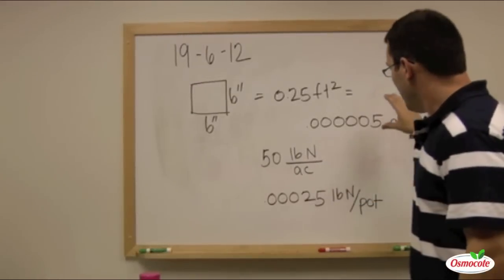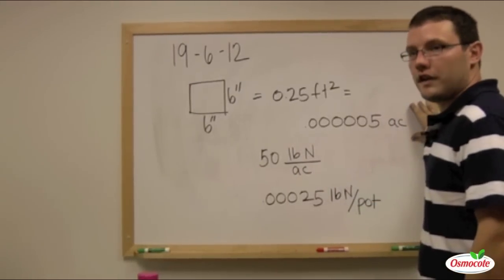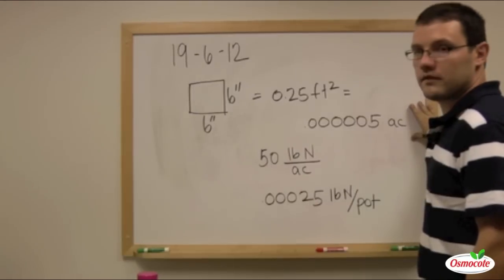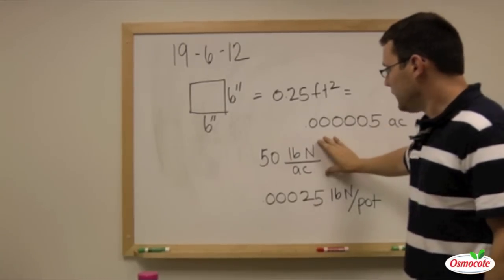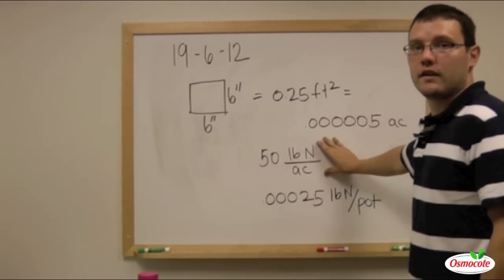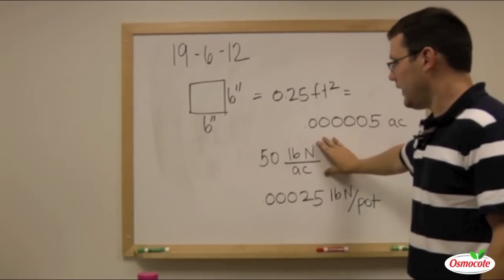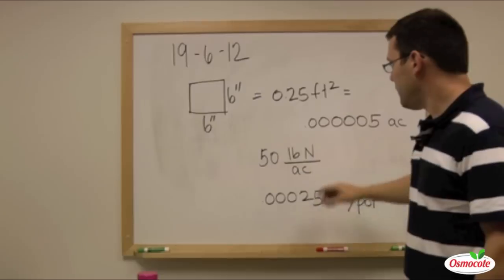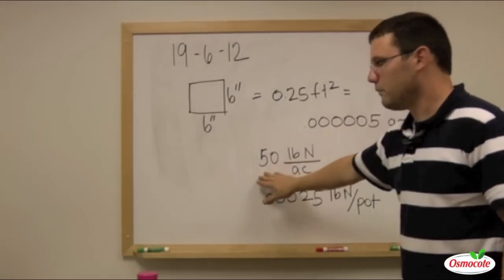So the total number of acreage in our pot is this. The total number of pounds per acre of nitrogen that we want to get in that pot is 50. So if we multiply our acreage by 50,